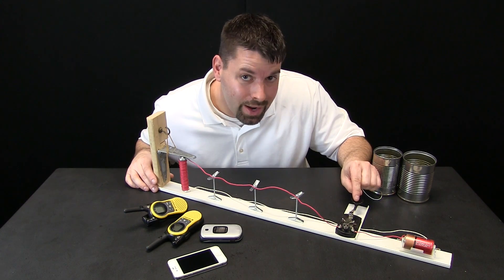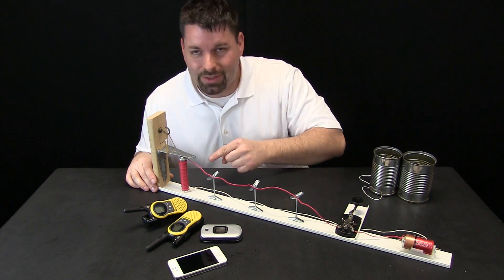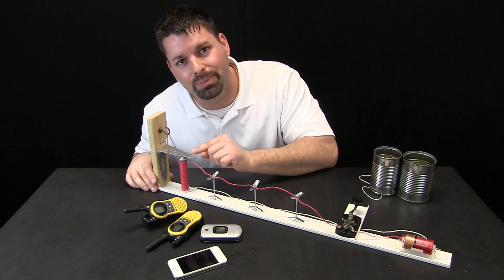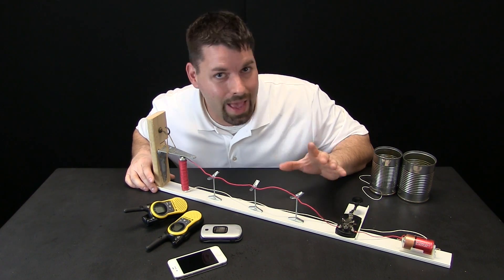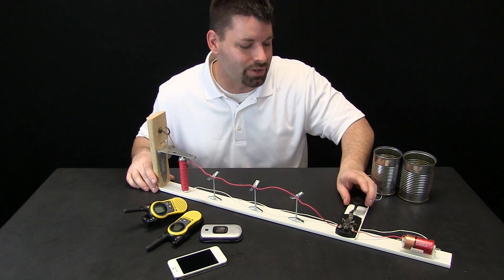So when I push down on this telegraph, the circuit is complete. Electricity can flow through the wires. It makes this metal pole into a magnet. That magnet attracts this piece of metal, allowing me to tap out a pattern of letters and numbers. Let us see our telegraph in action. Here we go.